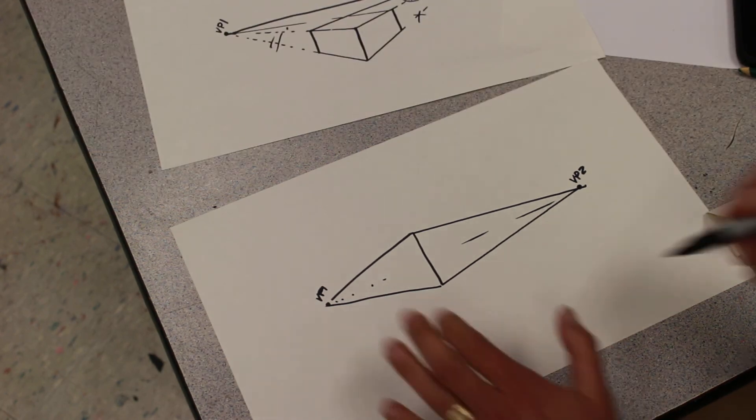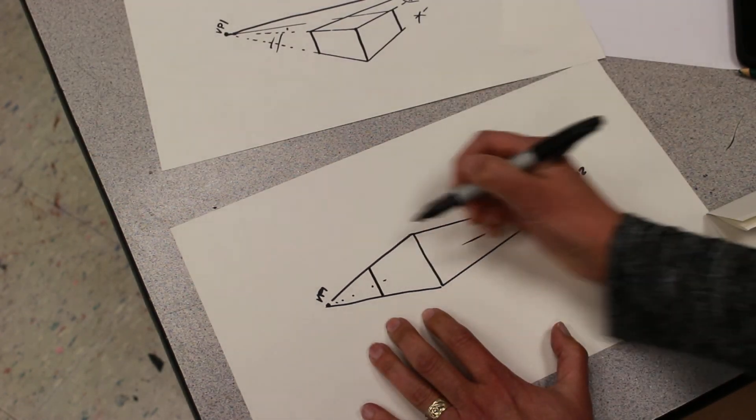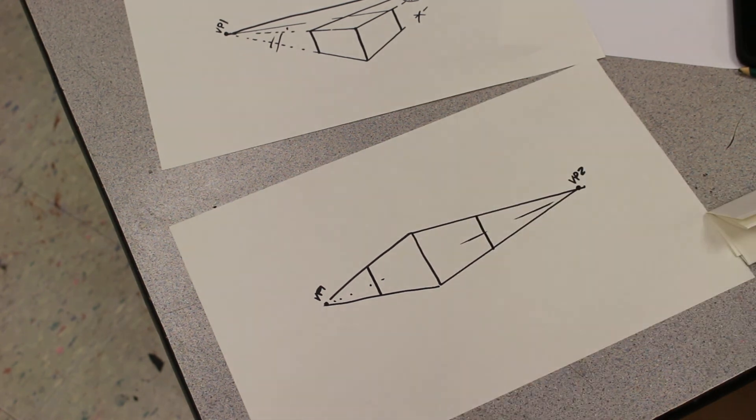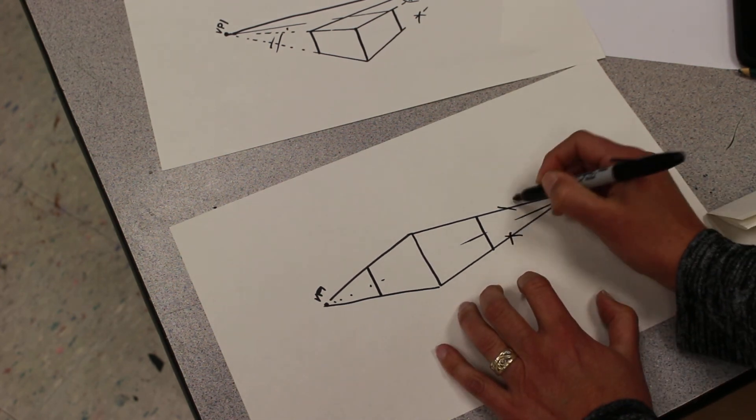Then you decide how big you want your box to be in space and draw a parallel line to your original corner line. And that is your box in two-point perspective. And you would erase these orthogonals.